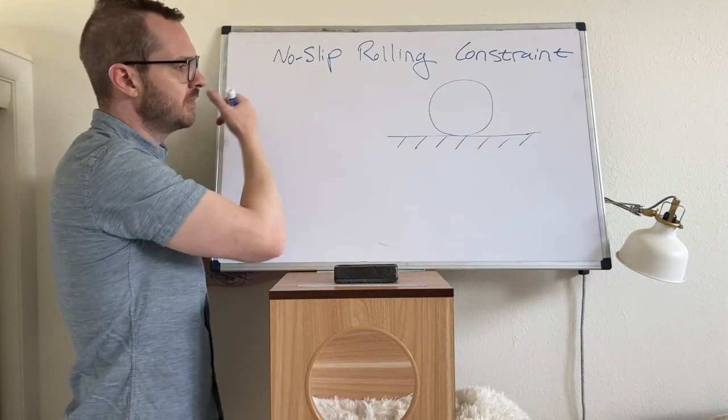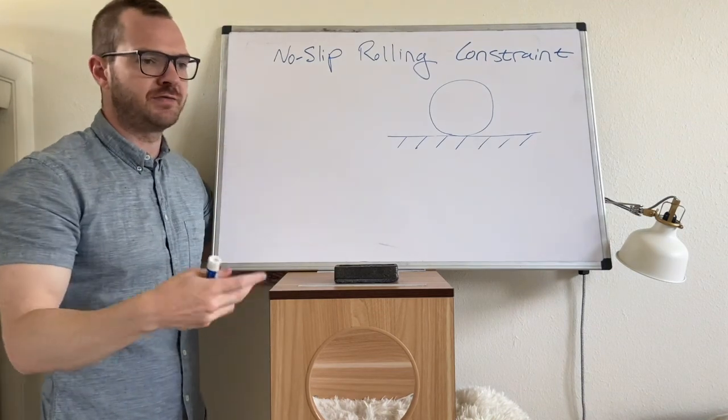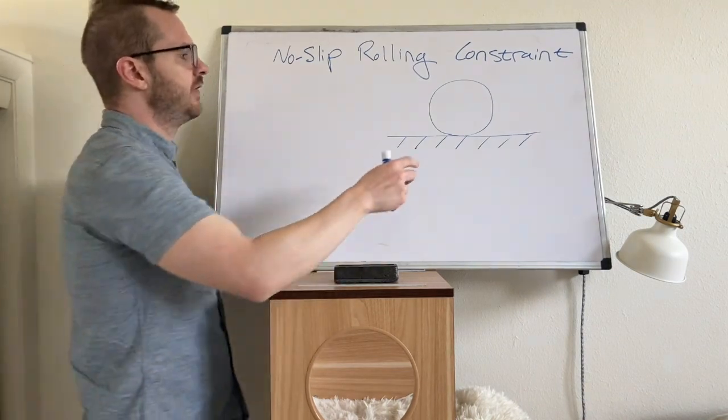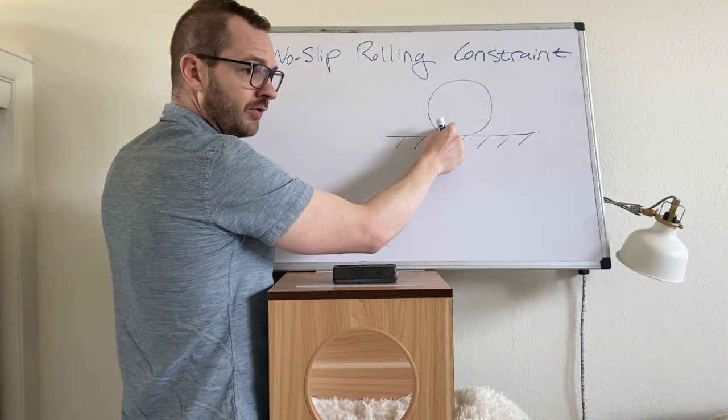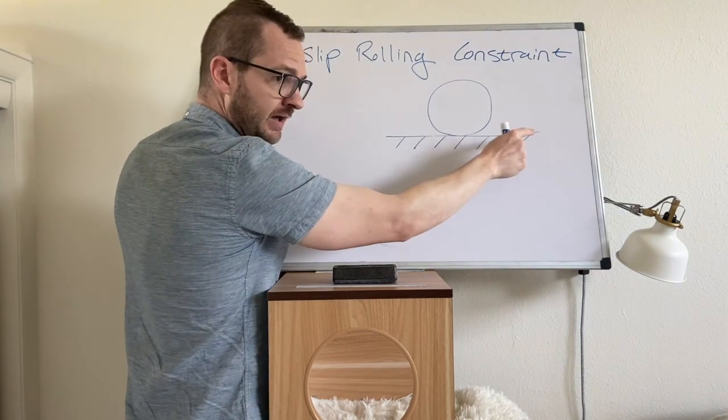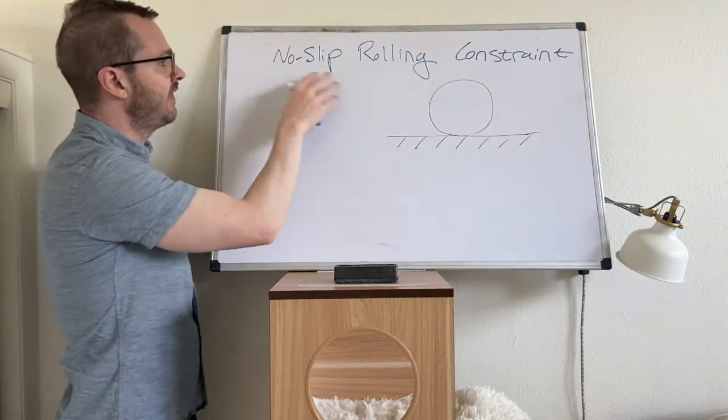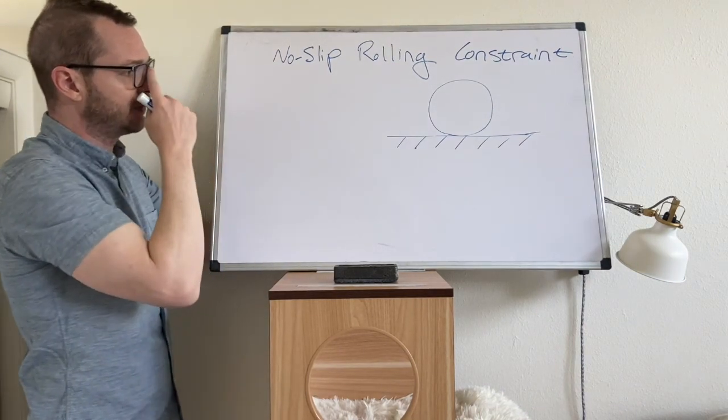If there is no slip, that means if you have traction on the wheel, then there is a very tight relationship between how this wheel turns and how this wheel translates. So we're going to look at that constraint, the no-slip rolling constraint.